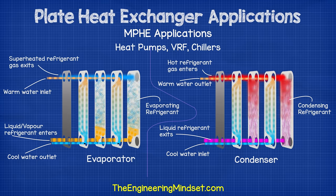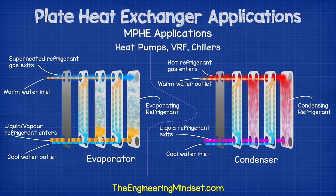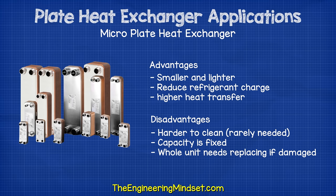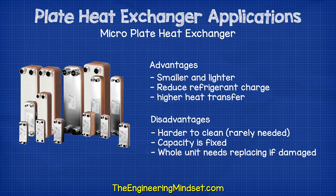Applications for micro plate heat exchangers include heat pumps, VRF units, and chiller evaporators and condensers. The pros are that they are lighter and smaller, have a reduced refrigerant charge, and have a higher heat transfer efficiency. The cons are that they are harder to clean, though this is rarely needed due to the fluids used and the turbulence of the design. For the brazed plate type, the whole unit must be replaced if damaged, and you cannot increase or decrease the capacity.